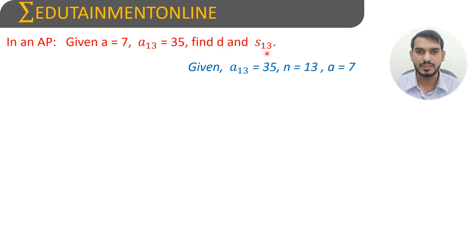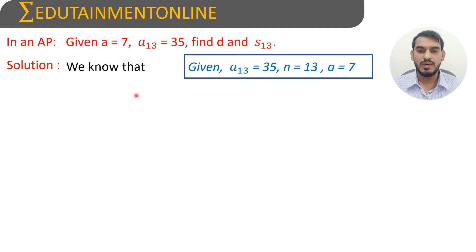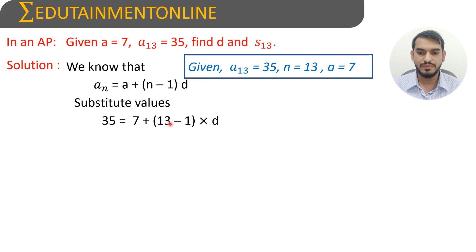We will use the formula aₙ = a + (n-1)d. We can substitute the given values: a₁₃=35 equals a plus (n-1)d, which is 7 plus (13-1)d. Now 35 = 7 + 12d. Transposing 7 to the other side,